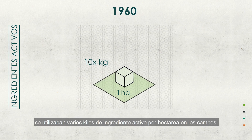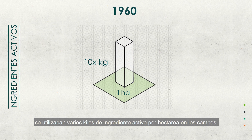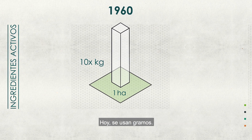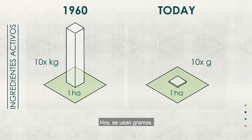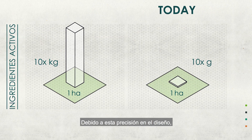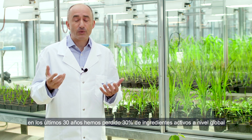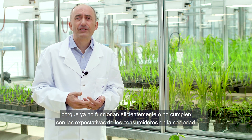This has had a huge benefit. Back in the 1960s there were tens of kilos of active ingredient being applied to a hectare of a field; today it's tens of grams — it's miniscule — because of this precision. Over the last 30 years we've lost 30 percent of active ingredients globally because they no longer work effectively or no longer meet societal expectations.